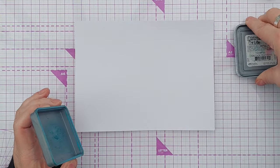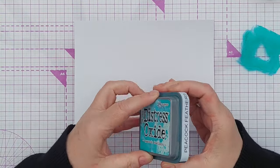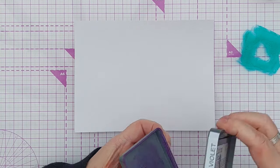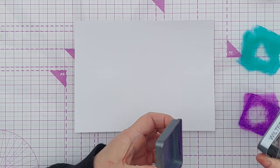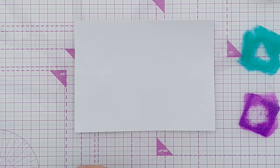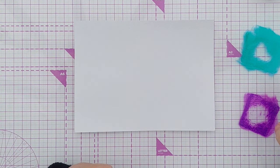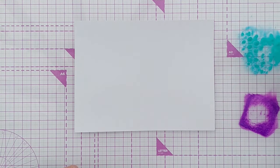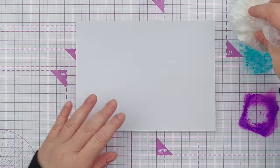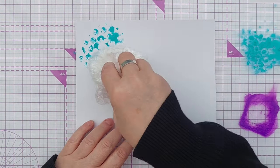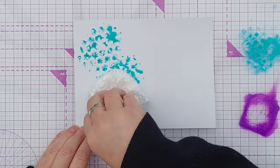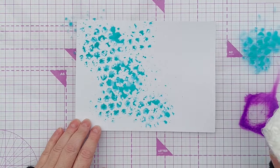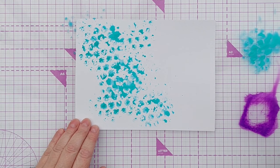This is a piece of mixed media paper and I've got some distress oxides here, I've got peacock feathers and wilted violet. I'll smush those down on my mat, add some water and use my bubble wrap smusher to pick up and smush down my colours and I get some lovely bubble wrap effect there.